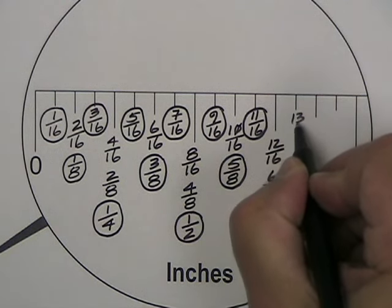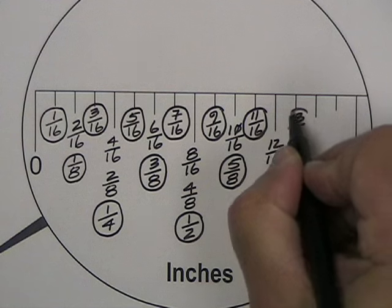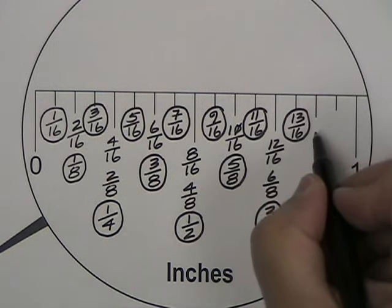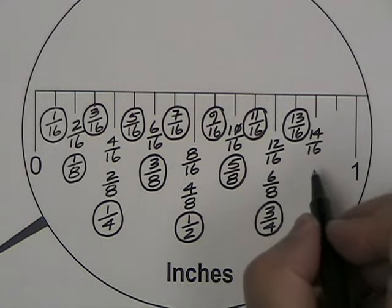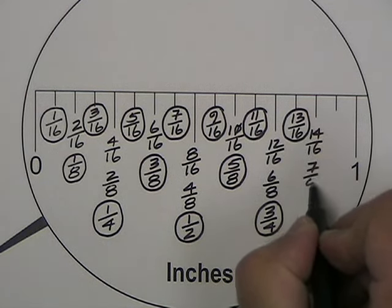Thirteen sixteenths can no longer be broken down any further and that remains thirteen sixteenths. Fourteen sixteenths, if we divide the top and bottom by two, we get seven over eight, seven eighths.